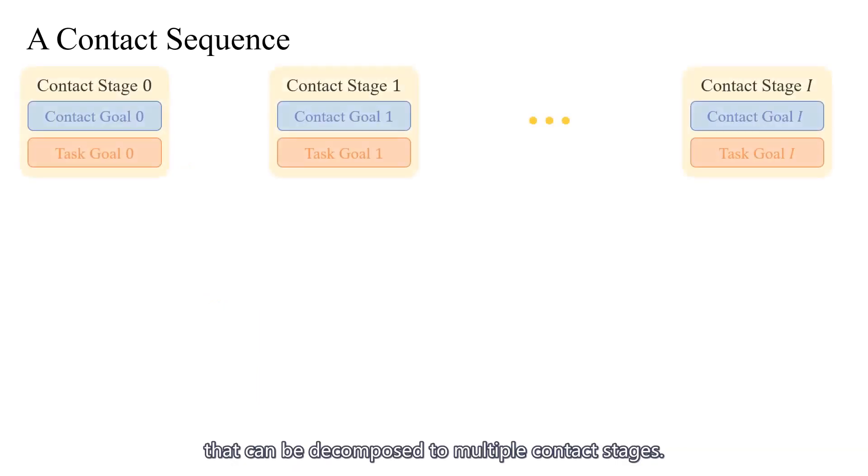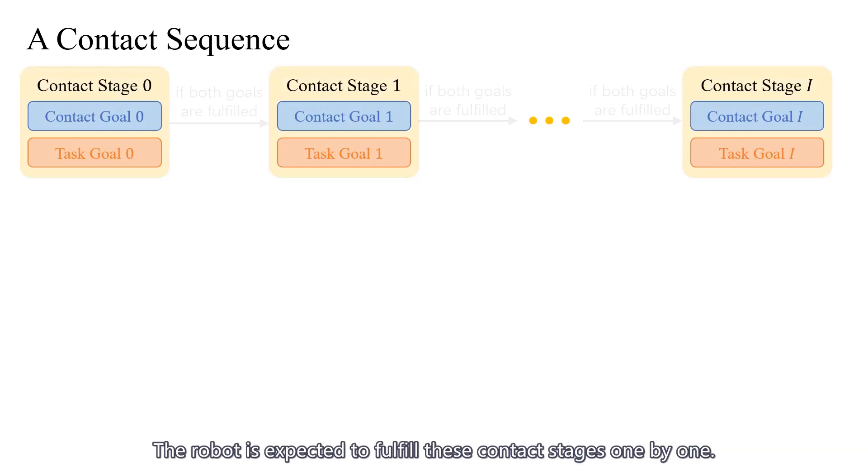Wokoko is proposed to solve such tasks, with a contact sequence that can be decomposed to multiple contact stages. The robot is expected to fulfill these contact stages one by one.